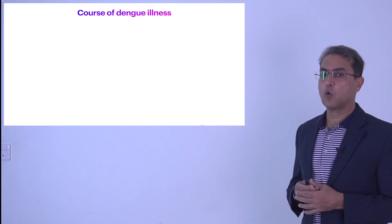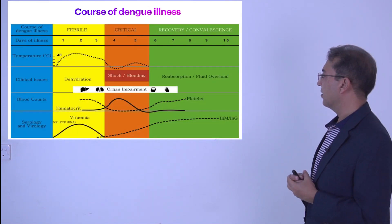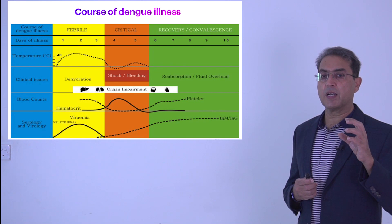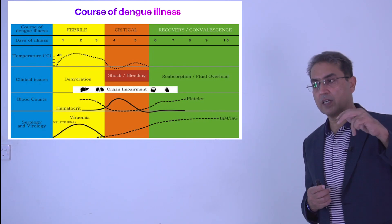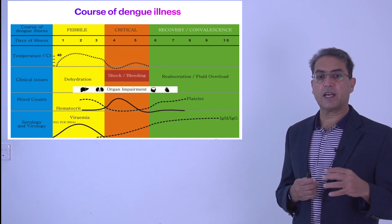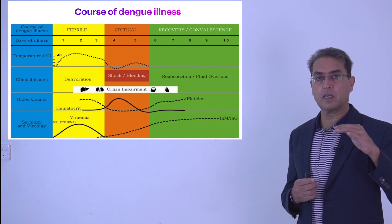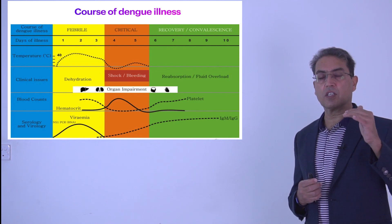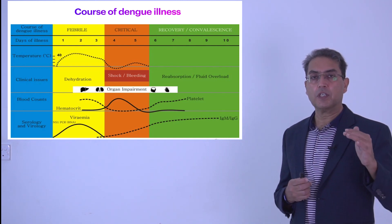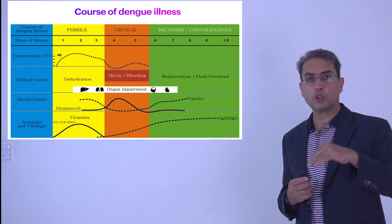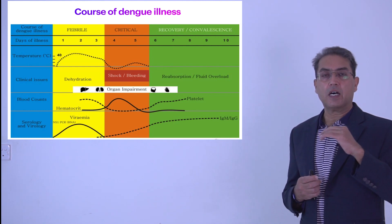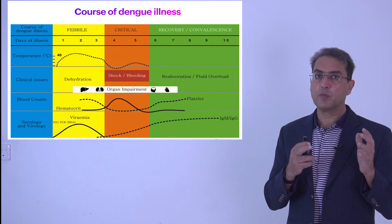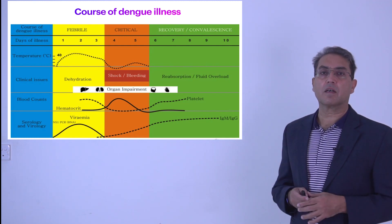Looking at the picture showing the course of dengue fever: during the febrile phase the patient has generalized symptoms. The platelets start declining towards the end of the febrile phase. The hematocrit may rise slightly in the early phase due to relative dehydration, then rises abruptly at the onset of the critical phase, and falls during recovery. Urine output is generally maintained but drops in the critical phase, then increases during convalescence. This demonstrates the rough timelines of the febrile, critical, and convalescent phases.